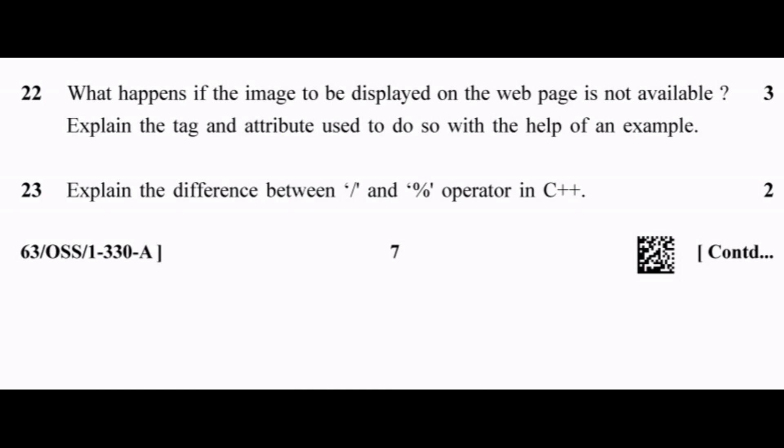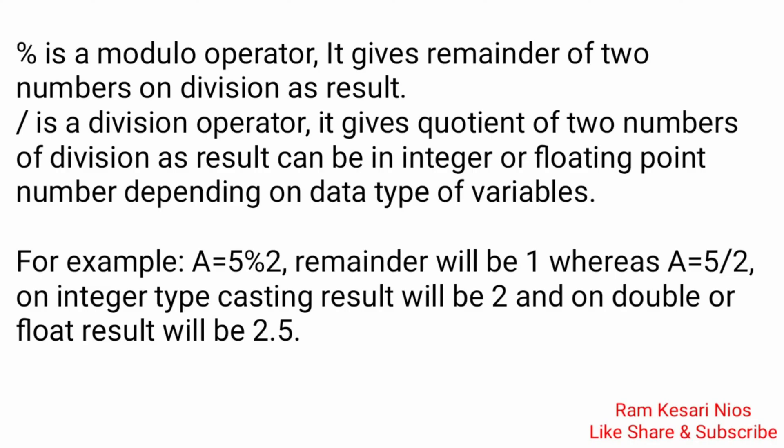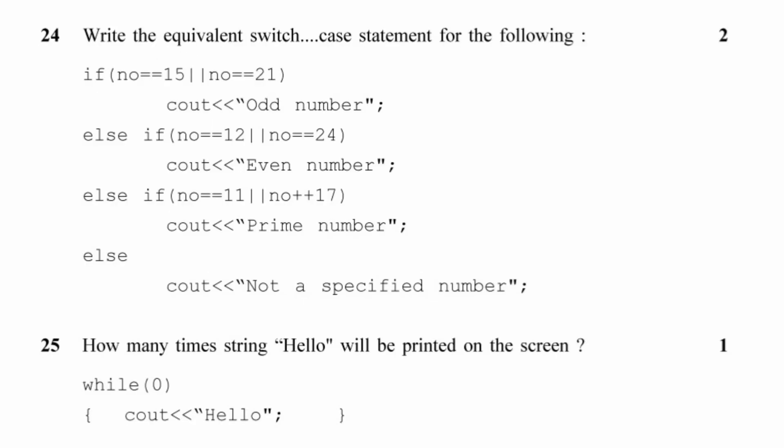Question 23: Explain the difference between / (slash) and % (percentage) operators in C++. The % is a modulo operator — it gives the remainder of two numbers on division. The / is a division operator — it gives the quotient of two numbers on division; the result can be an integer or floating-point number depending on the data type of variables. For example: a = 5 % 2, remainder will be 1; whereas a = 5 / 2 on integer type gives 2, and on double or float gives 2.5.